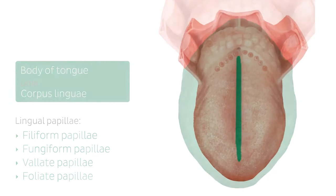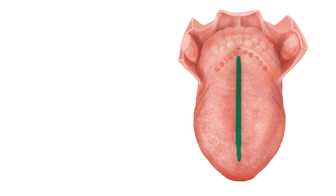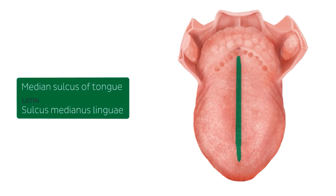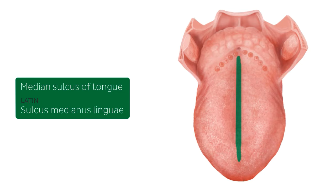Moving on to the median sulcus: the median sulcus of the tongue is a groove that runs from the apex of the tongue to just in front of the beginning of the root of the tongue. This sulcus divides the body of the tongue into a left and right side.